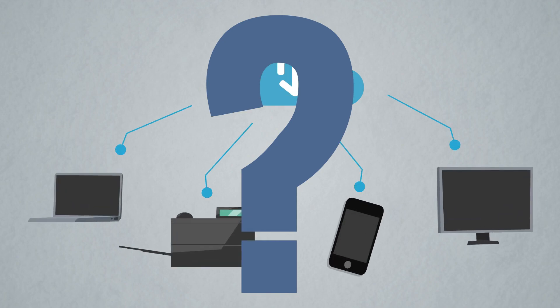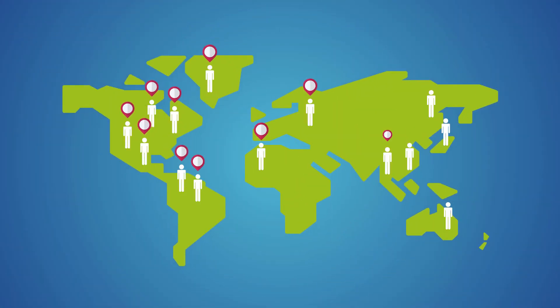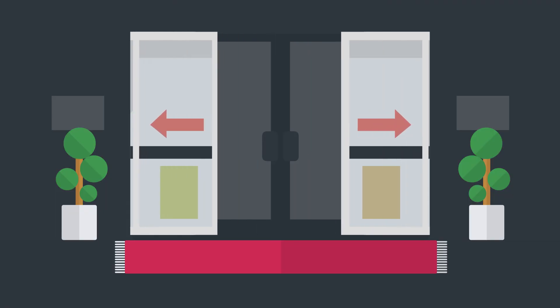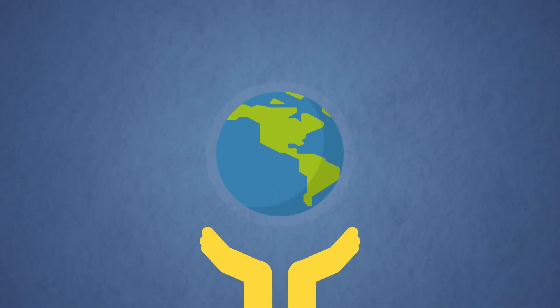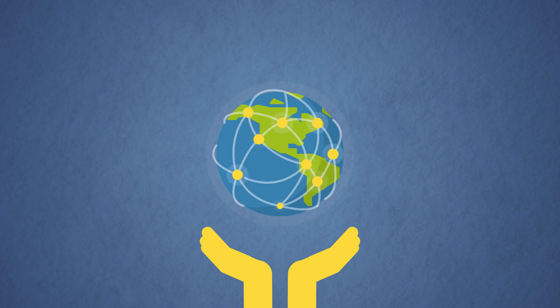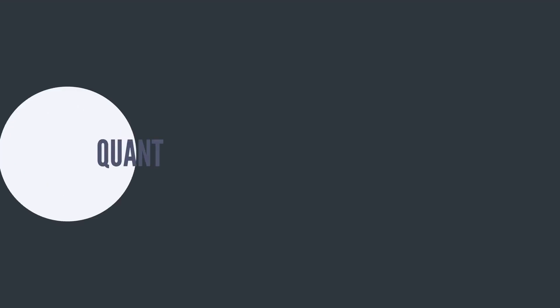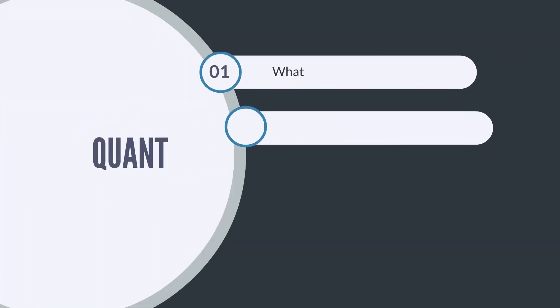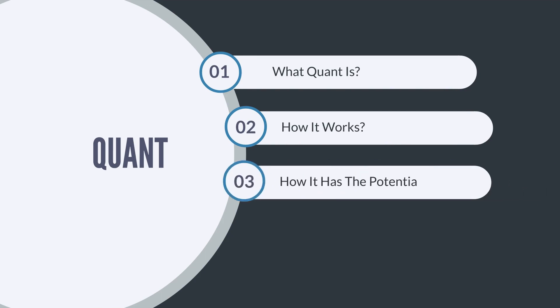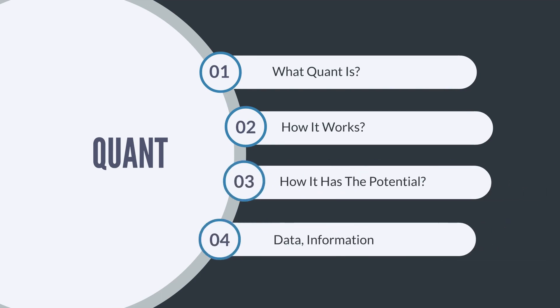The difficulty of integrating traditional systems with distributed ledger technology (DLT) and the problem of interoperability amongst blockchains has delayed widespread adoption of blockchain technology. Quant's Overledger DLT gateway, which provides interoperability across global networks and blockchains, addresses these issues. In this video, I will tell you what Quant is, how it works, and how it has the potential to alter the way data, information, and assets flow throughout the digital financial ecosystem.